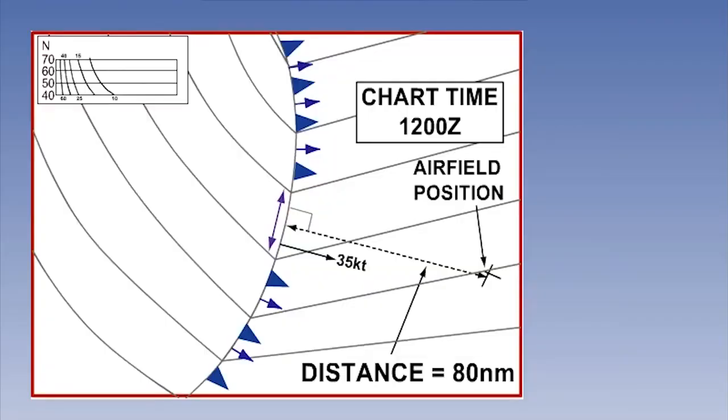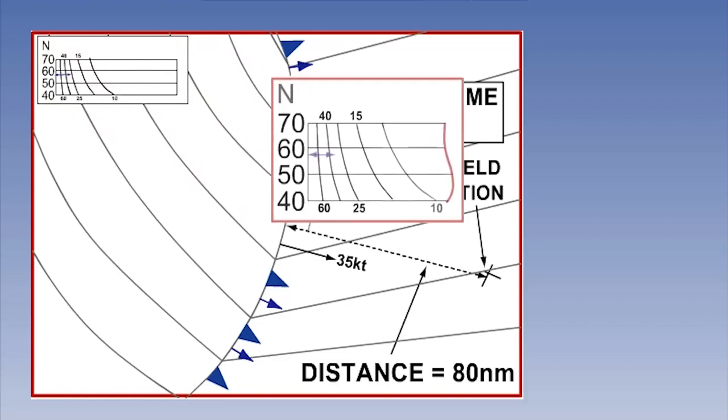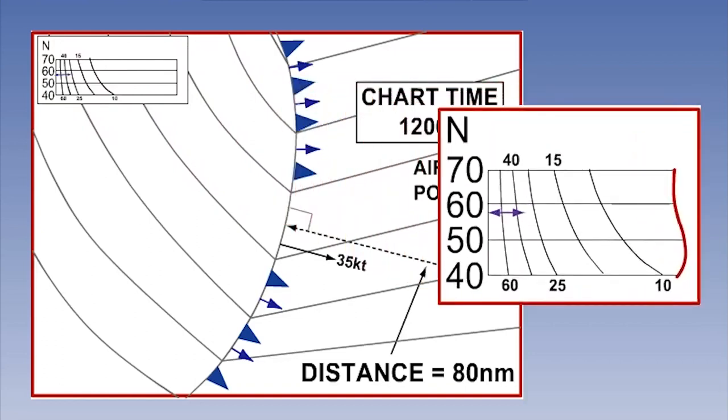In a similar manner to the warm front technique, the speed of movement of a cold front can be estimated. Again, using a weather chart with a geostrophic scale on it, measure the isobaric spacing on the front like this. This gives an approximate answer for the speed of the front in the direction of the isobars behind the front itself.